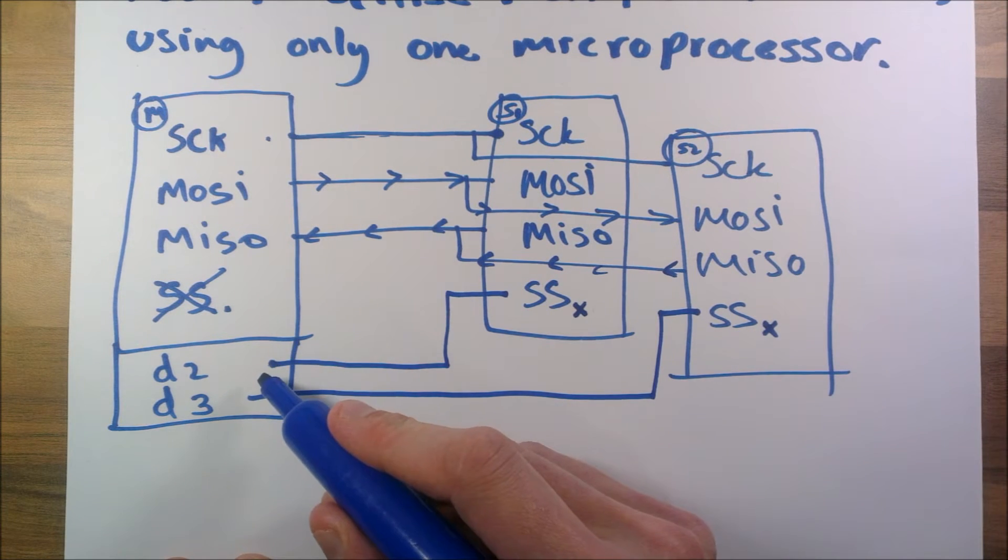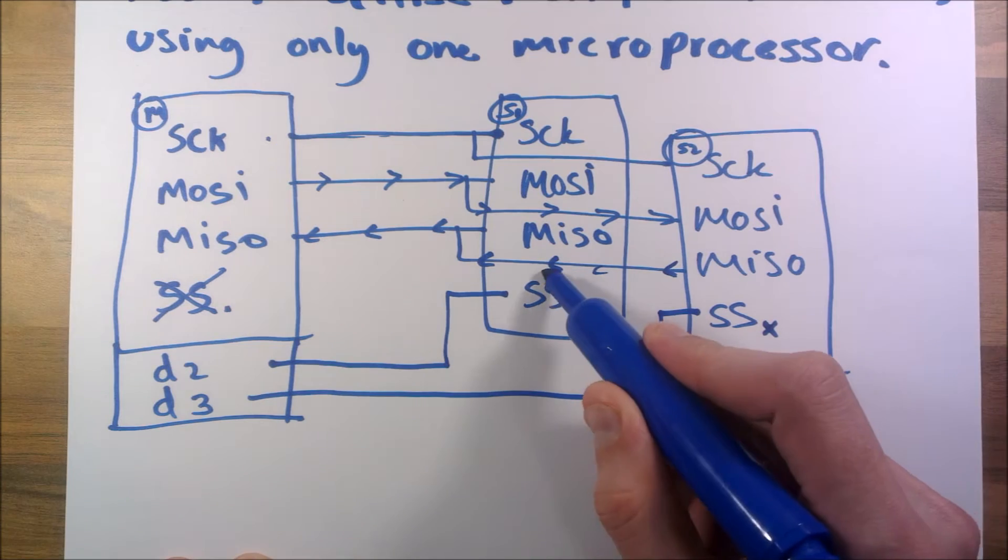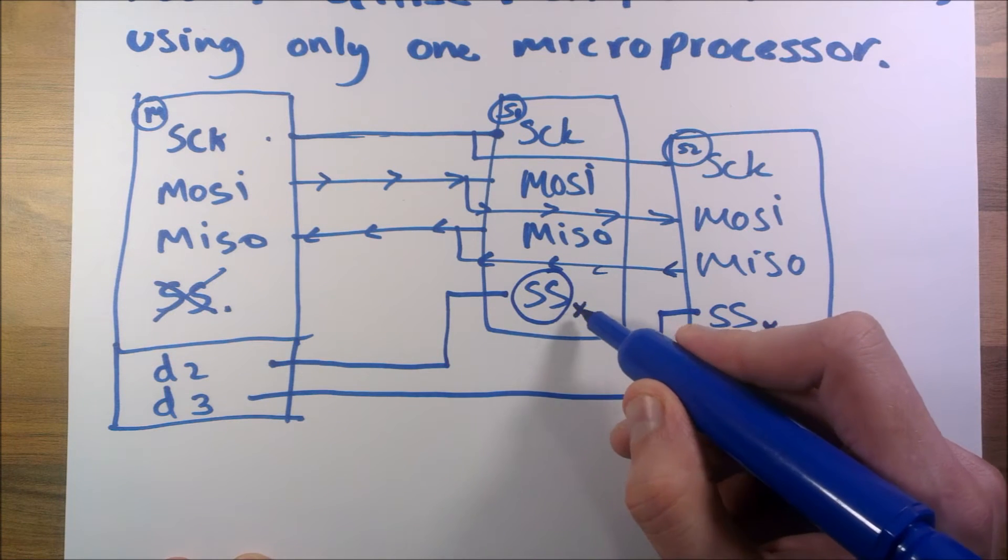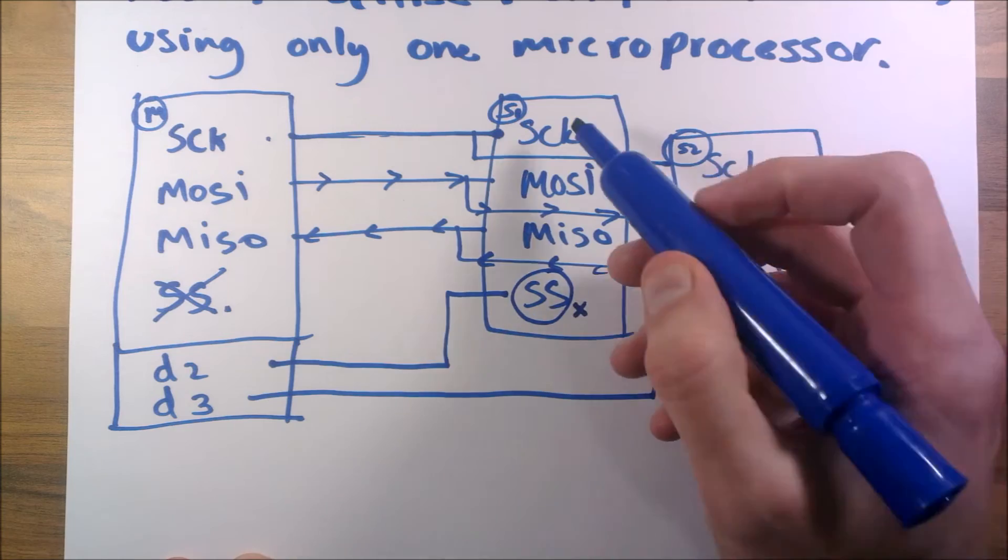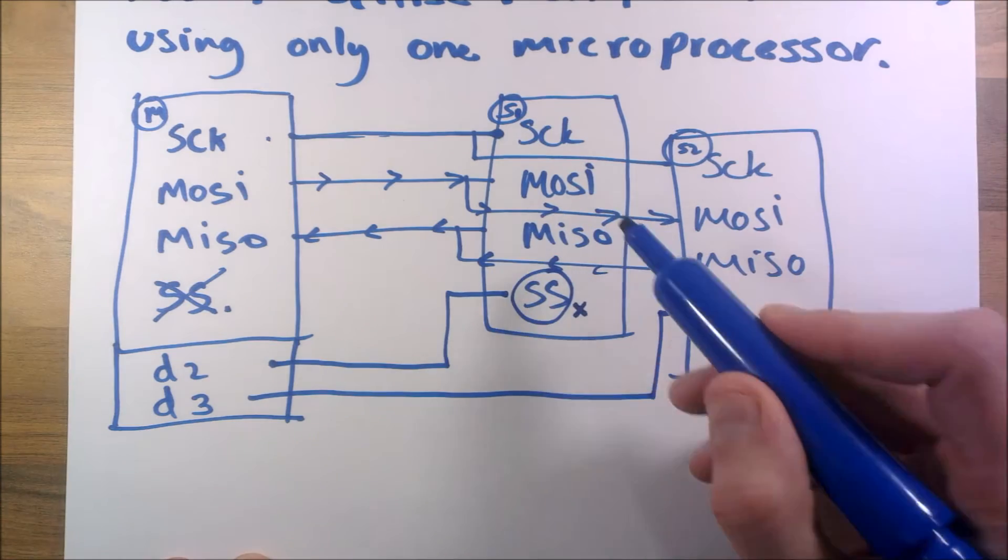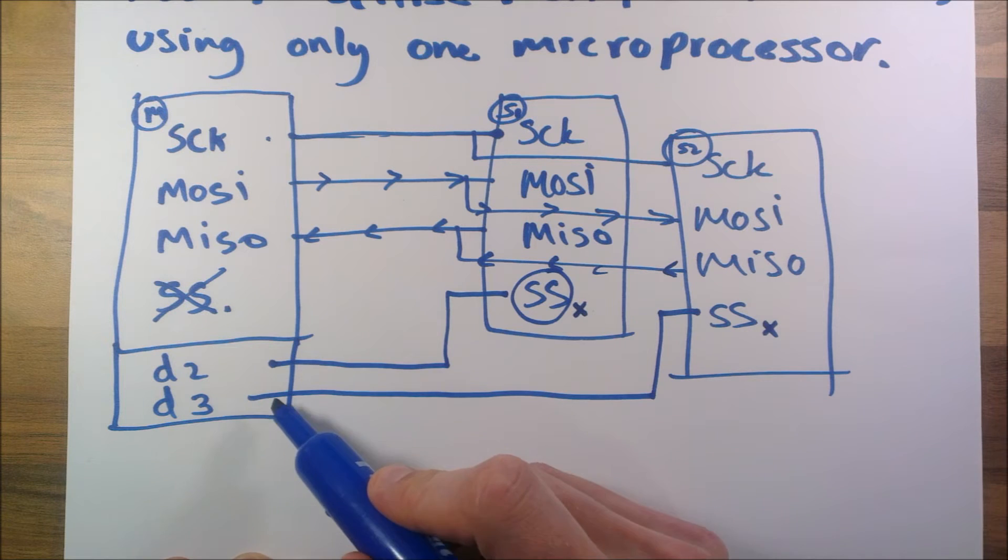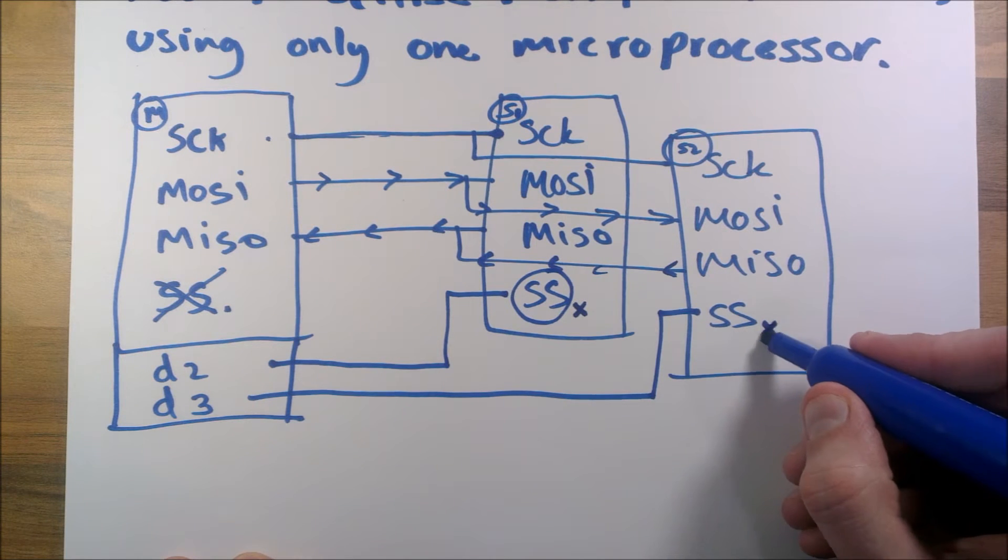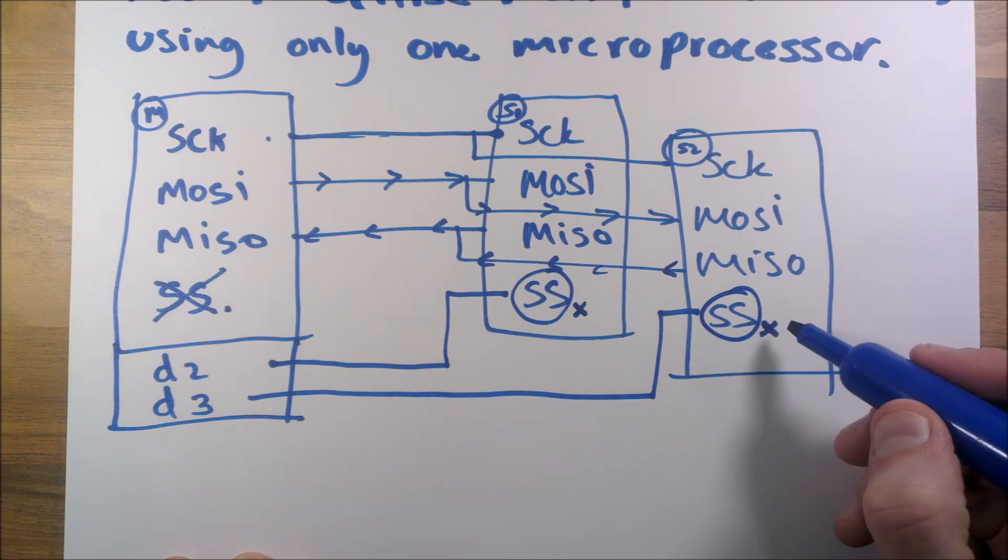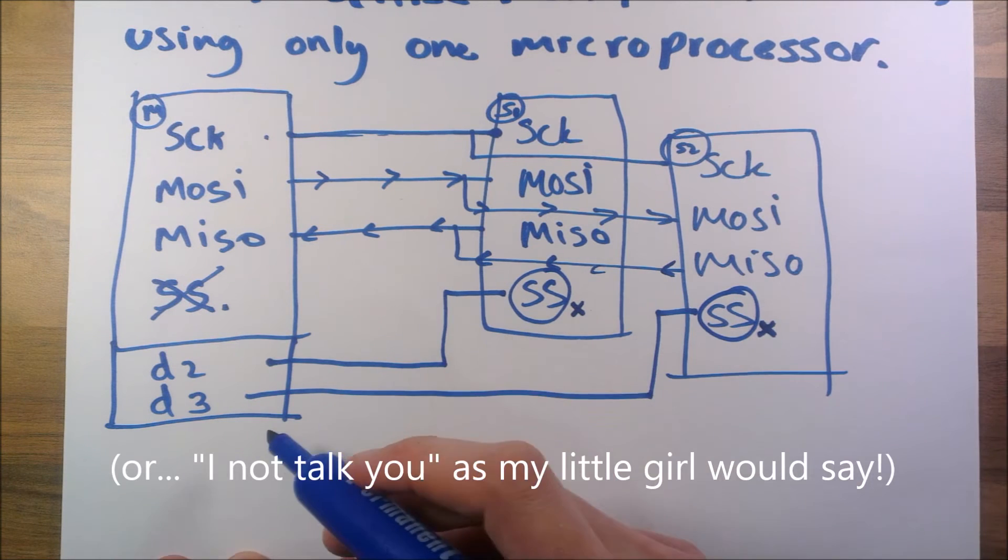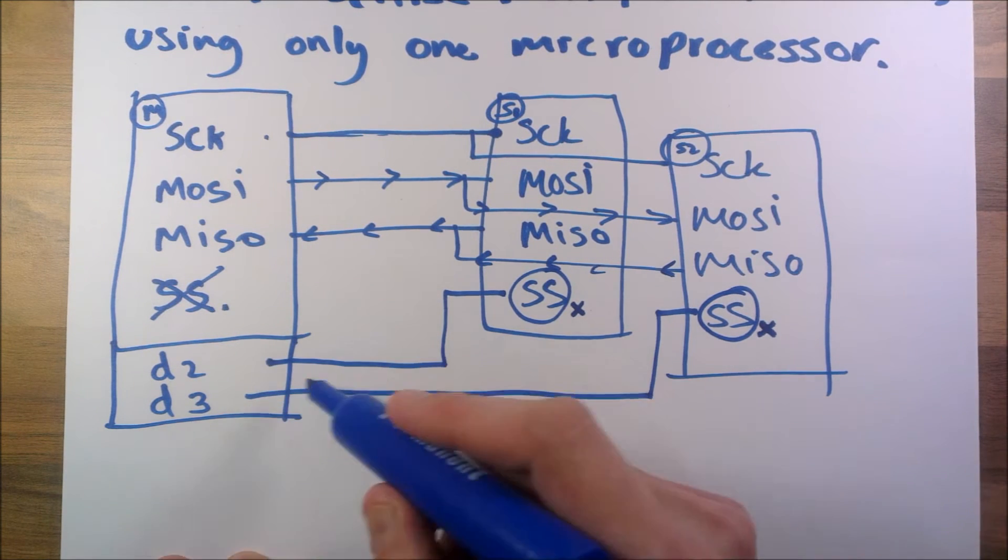Then in the Arduino, if we do a digital write high, SS here will be set high, which means don't listen and don't speak - it basically means I'm not talking to you at the moment. Likewise here, if we set D3 digital three high, that means this one don't listen and don't talk - we're not talking to you.